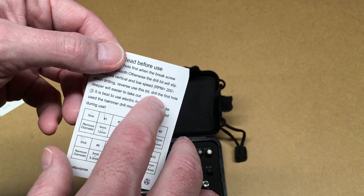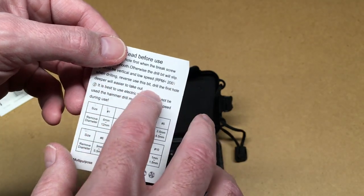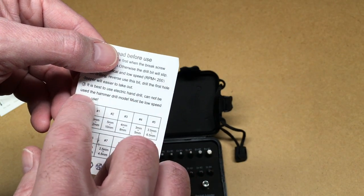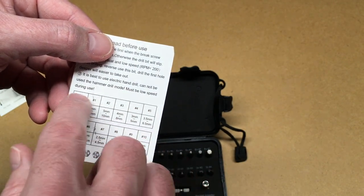In reverse, use this bit to drill the hole first. Deeper will be easier to take out. It says it is best to use an electric hand drill. Cannot be used with hammer drill mode. Must be low speed during use.